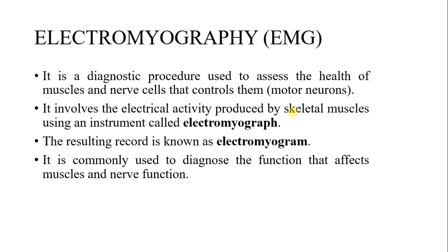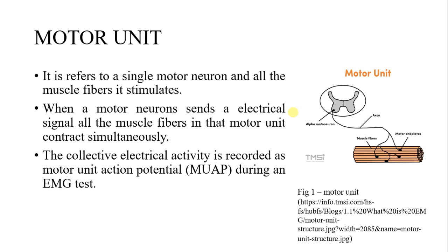A motor unit refers to a single motor neuron and all the muscle fibers it stimulates. When a motor neuron sends an electrical signal, all the muscle fibers in that motor unit contract simultaneously. The collective electrical activity is recorded as a motor unit action potential, formally known as MUAP, during an EMG test.